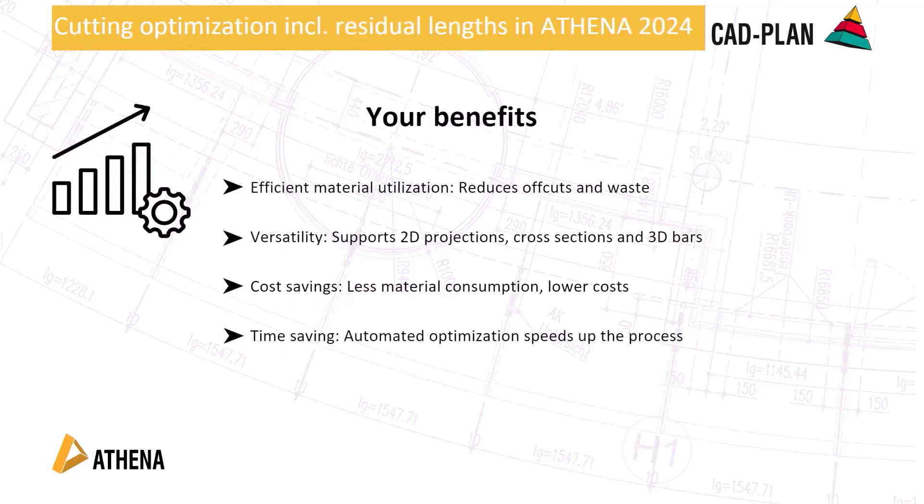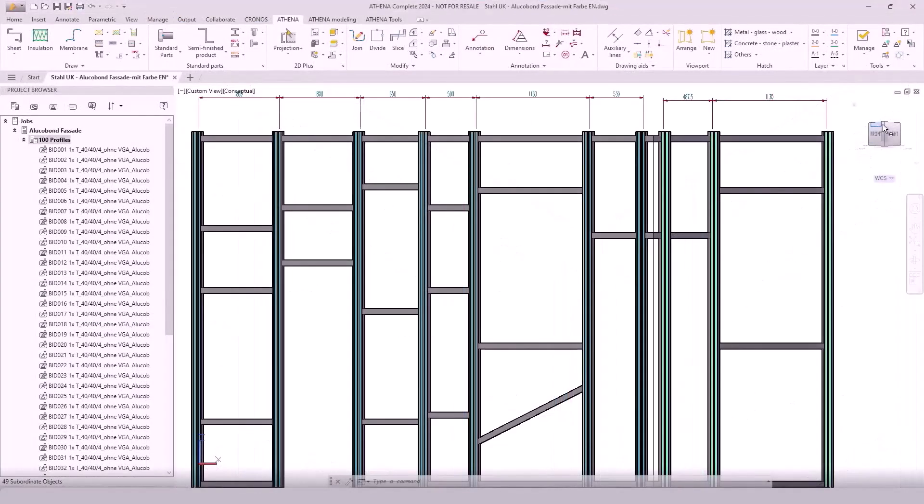We come to the first major feature: the cutting optimization including residual length. Your benefit in this Athena 2024 update is efficient material utilization. It reduces your offcuts and waste significantly. It supports 2D-Plus projections, cross sections, and Athena 3D constructions. Cost savings are another big factor — less material consumption, lower costs, and it is time-saving. With our automated optimization, it speeds up the process significantly.